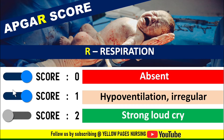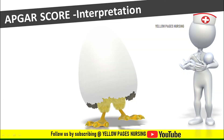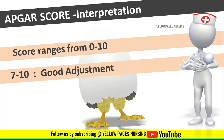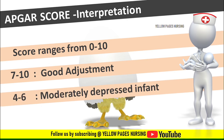Now comes interpretation of the APGAR score. The score ranges between 0 to 10, which is the sum total of all the scores. A score of 7 to 10 indicates good adjustment — no intervention is required, the baby is doing well, and only routine care following delivery is needed. A score of 4 to 6 indicates a moderately depressed infant, where some resuscitation assistance may be required, including oxygen, suction, and other assistance.